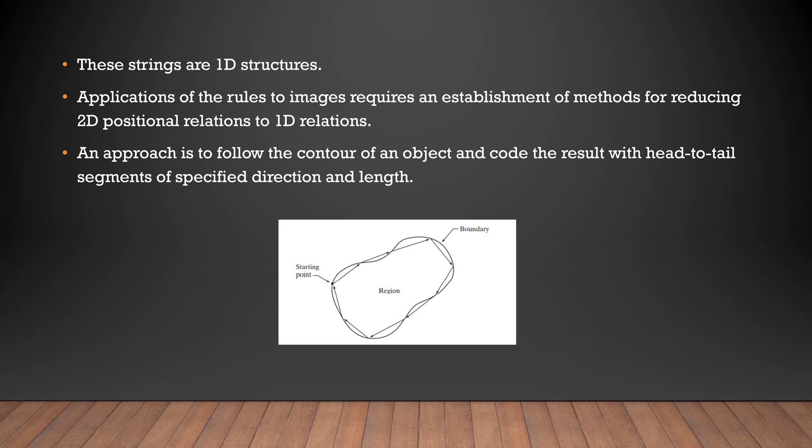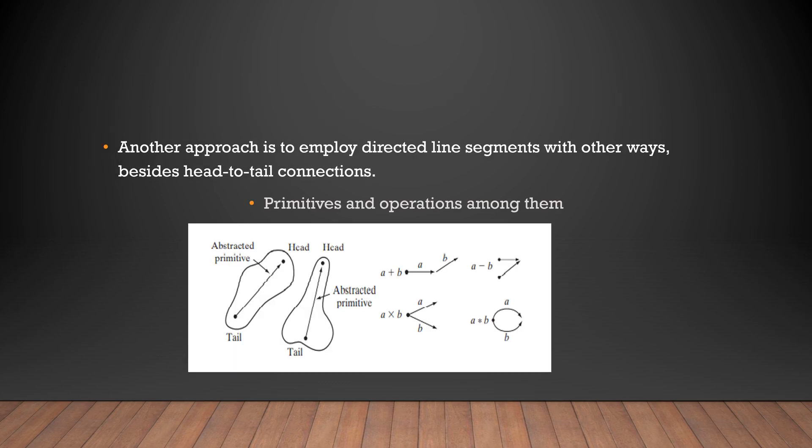If we observe the boundary taken from the segmented image, we have different curves, and each curve is represented with a line segment. Each line segment has one tail and one head, forming a cyclic structure which ends at the starting point. In the given approach, we consider only a single line segment from head to tail — this is called an abstract primitive path. The operations among primitives are: a plus b, a minus b, a into b, and a convolution b.